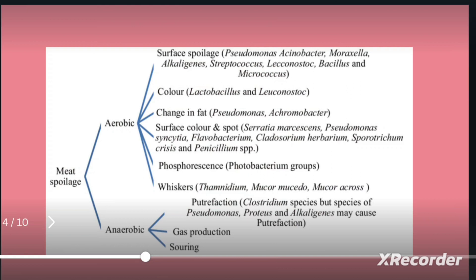Broadly, microbial spoilage of meat can be grouped into aerobic and anaerobic microorganisms. Aerobic microorganisms spoil the surface of the meat by growing on it. Examples include Acinetobacter, Streptococcus, Bacillus, Micrococcus, Alcaligenes, and Pseudomonas. There are also various species like Leuconostoc which try to change the color of the meat product.